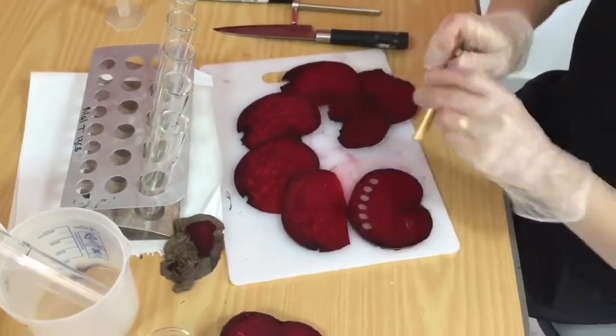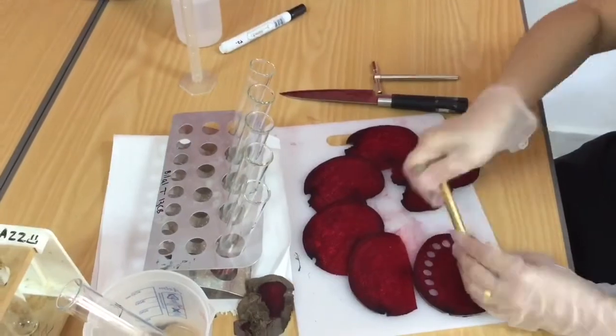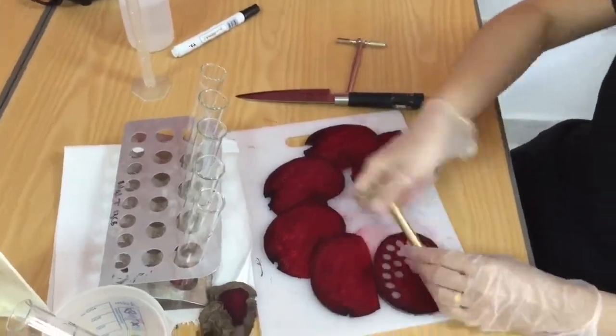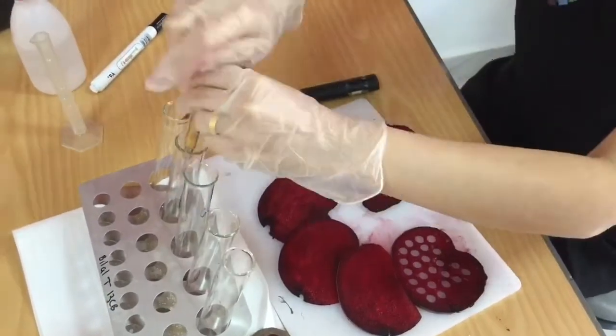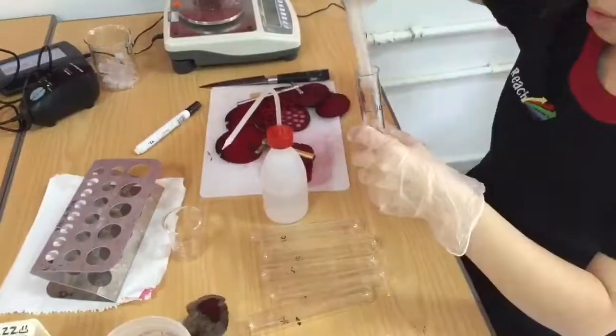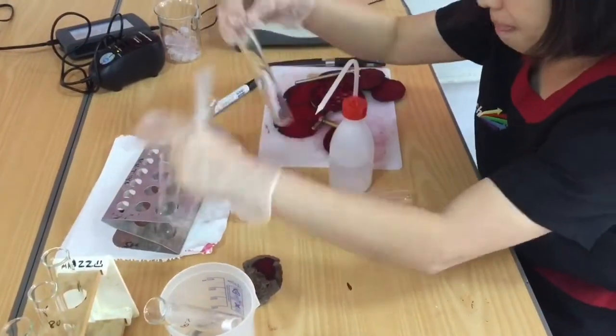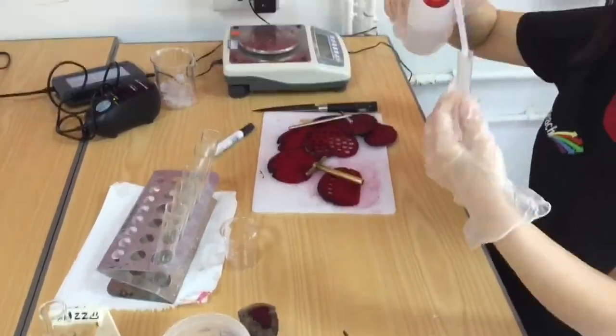Now using the cork borer, I'm going to remove 6 pellets and put them inside a boiling tube, and I'm going to do that for 6 different boiling tubes. Now I've put those boiling tubes with the 6 pellets of beetroot to one side.